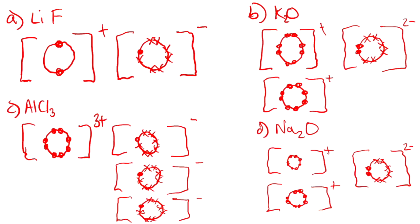For potassium oxide, there should be two potassiums reacting with one oxygen. That's because potassium only has 1 electron to give, but oxygen needs 2. Each potassium has 8 electrons in its outer shell and a + charge. Oxygen gains both electrons, so it has a 2− charge.